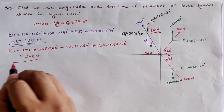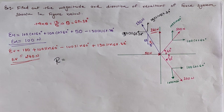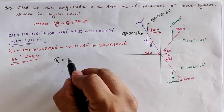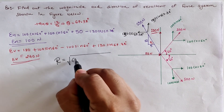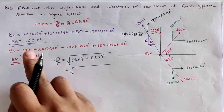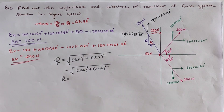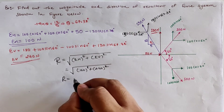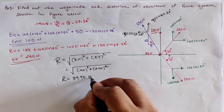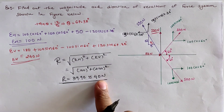We have calculated sigma H and sigma V — the algebraic summations of horizontal and vertical forces respectively. To find the resultant, we use: R equals the square root of sigma H squared plus sigma V squared. With sigma H equals 100 and sigma V equals 240, solving this gives R approximately equal to 260 newton.